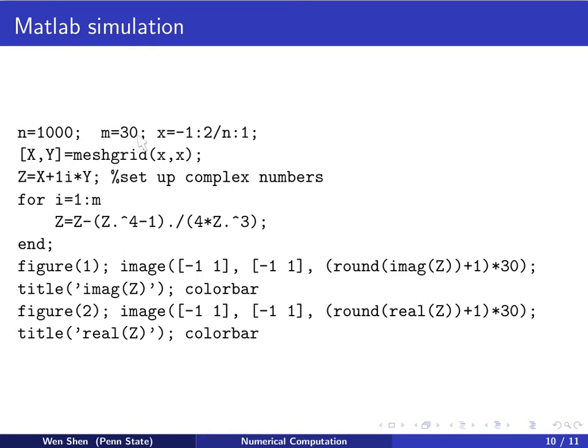So we choose n equal 1000, m is 30, that's the number of iterations. And x is a space variable, it's from negative 1 to 1, taking 1000 points, and we generate a mesh grid. So it's a square from negative 1 to 1 for both x and y. And then we set up the complex number. At every point, it's set to be x plus i times y. That will be the complex number. And we put that in z.